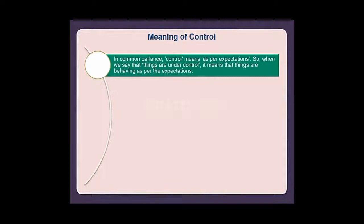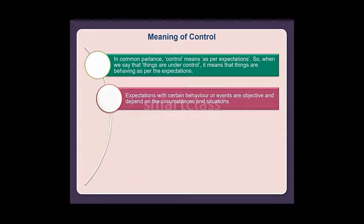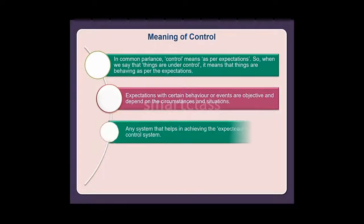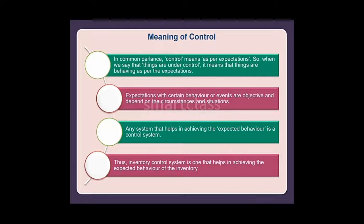In common parlance, control means as per expectations — so when we say things are under control, it means things are behaving as per expectations. Expectations with certain behavior or events are objective and depend on the circumstances and situations. Any system that helps in achieving the expected behavior is a control system. Thus, an inventory control system is one that helps in achieving the expected behavior of the inventory.